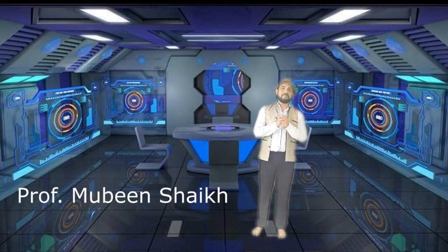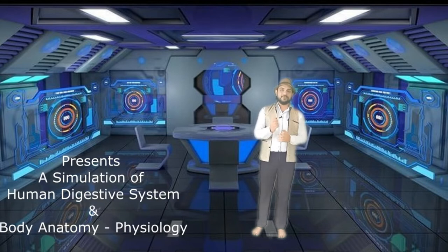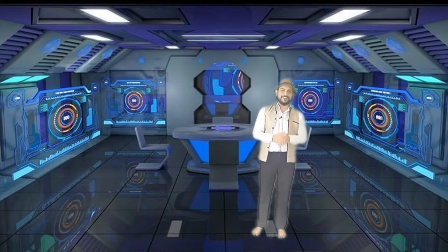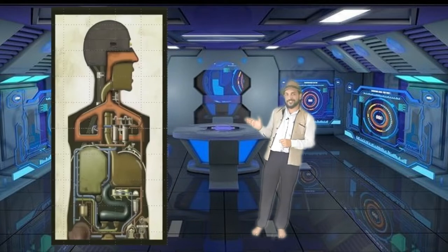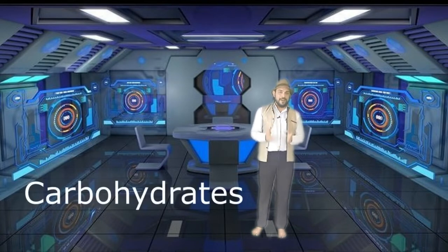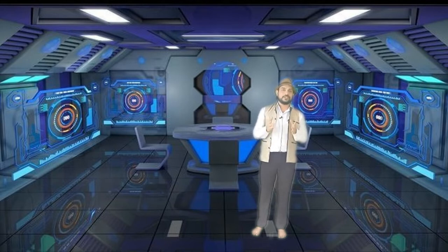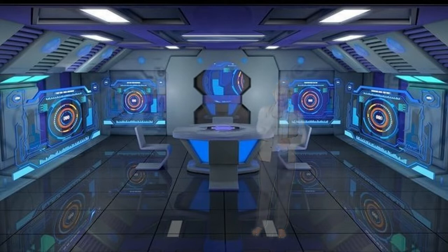Hello and welcome! I am Professor Mubin Shaikh and in this video I am going to show you the simulation of the human digestive system and human body anatomy and physiology in the form of a machine — because the human body is like a machine. The food which we eat consists of biomolecules like proteins, carbohydrates, lipids, minerals and vitamins. The process of digestion starts right from the moment we take food inside our mouth, especially for carbohydrates. Let's get into the machine to understand it fully.